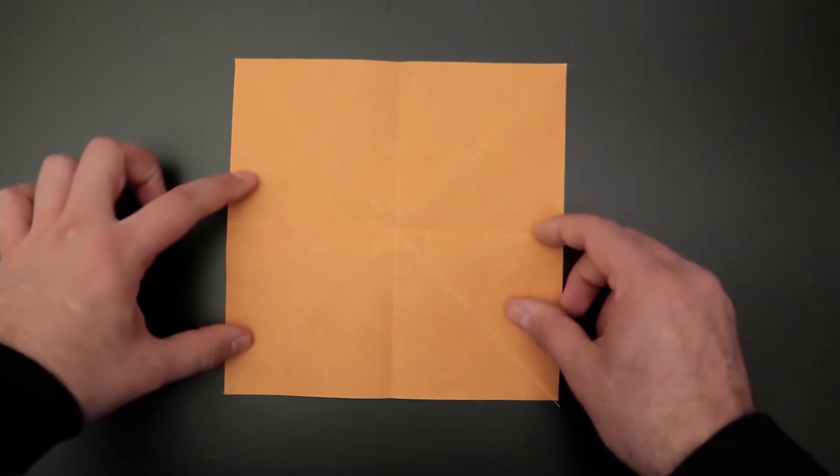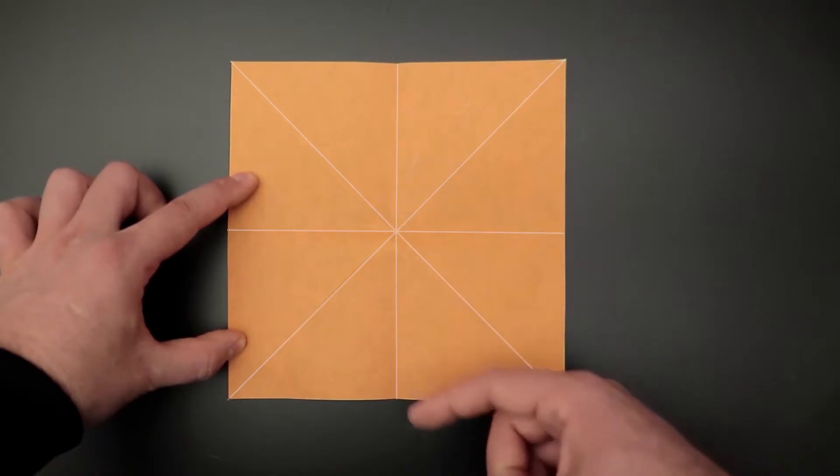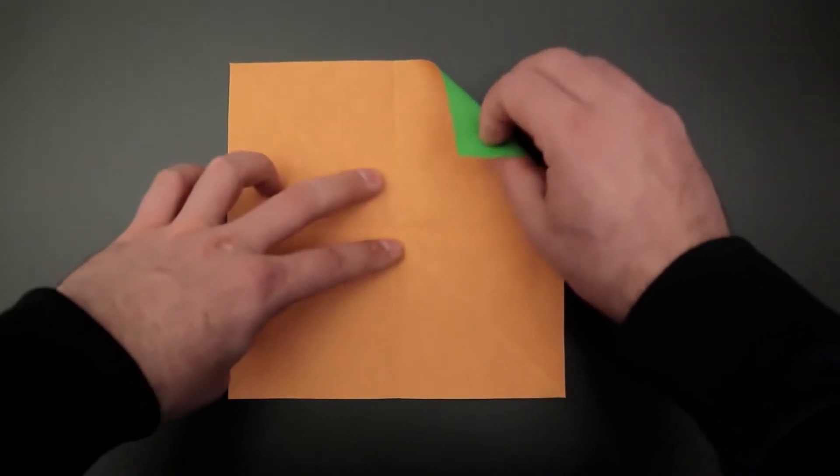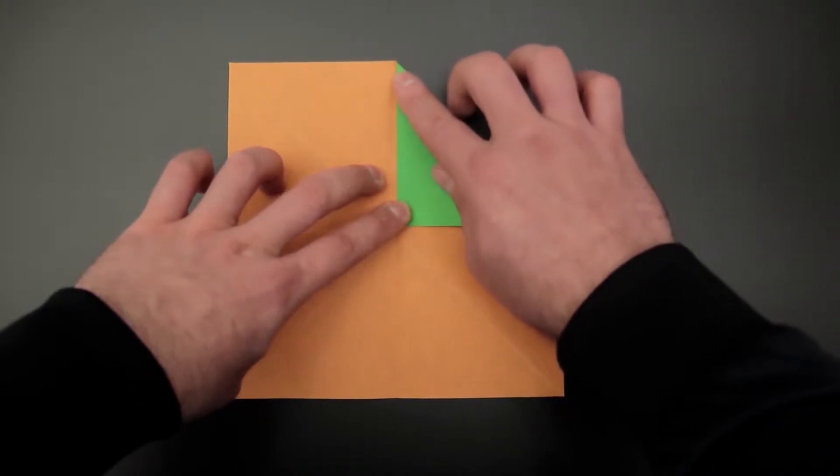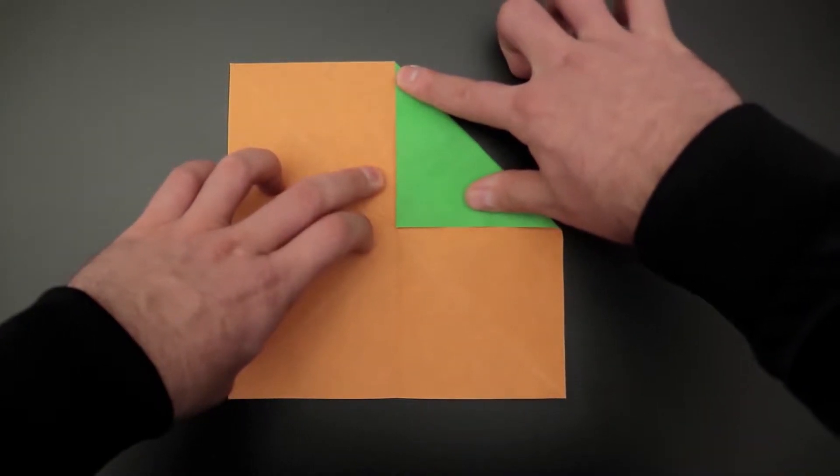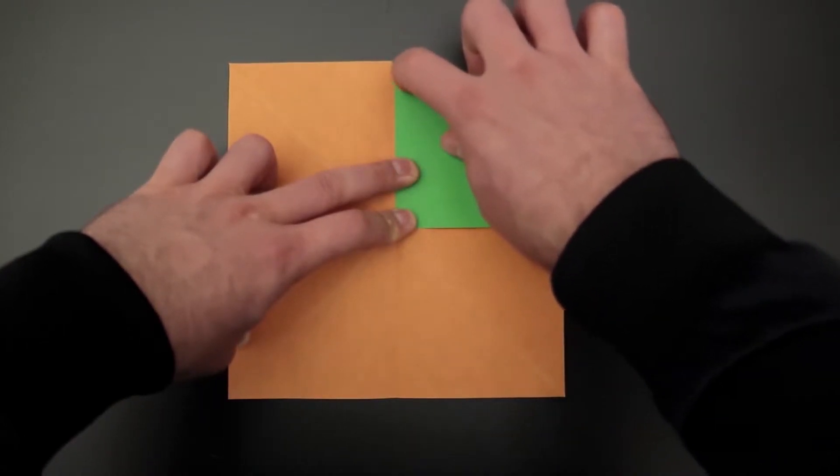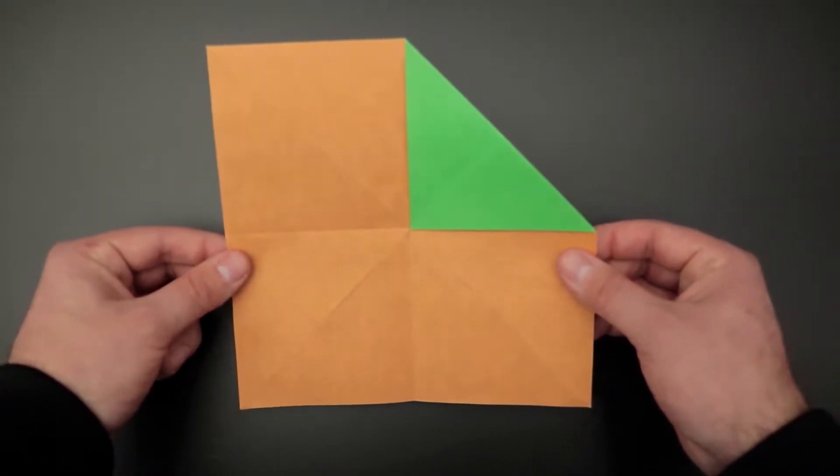Having these folds, here on the top side, let's bring the corner to the middle, folding this diagonal. This side is ready, now let's turn it over.